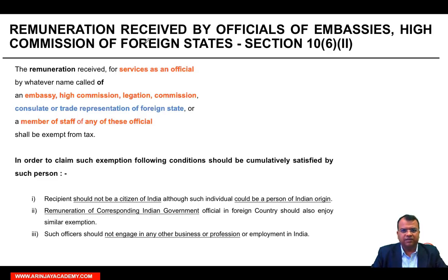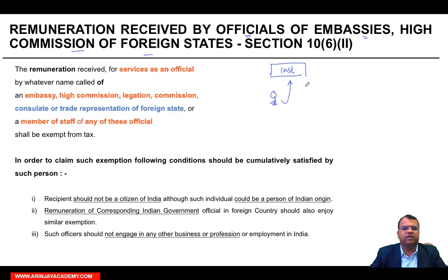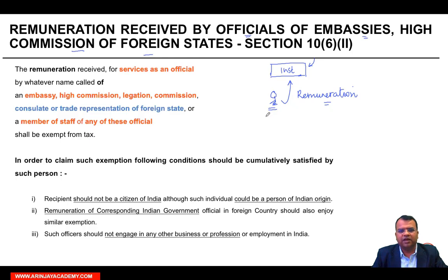Now, under section 10, the remuneration received by certain officials of the embassies, high commission of foreign states and some other institutes is exempt from tax. अगर इन में से कोई भी एक institution है, and there is a person who is working from them, and for these services, he derives a remuneration. वो remuneration जो है exempt होता है income tax से. लेकिन उसकी कुछ conditions हैं. Let us first see those conditions.